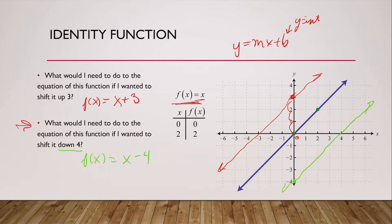What have we deduced for ourselves? If I want to shift this function up, so vertically up three, I need to add three. And if I want to shift my function down, I would need to subtract. I wanted to shift it down four, so I subtracted four.